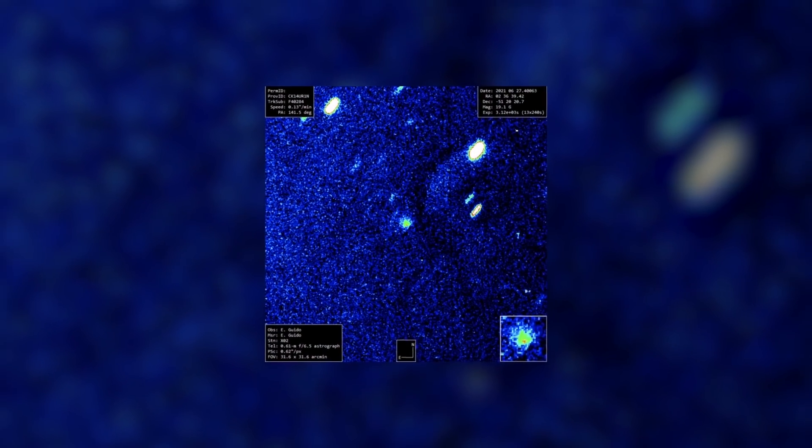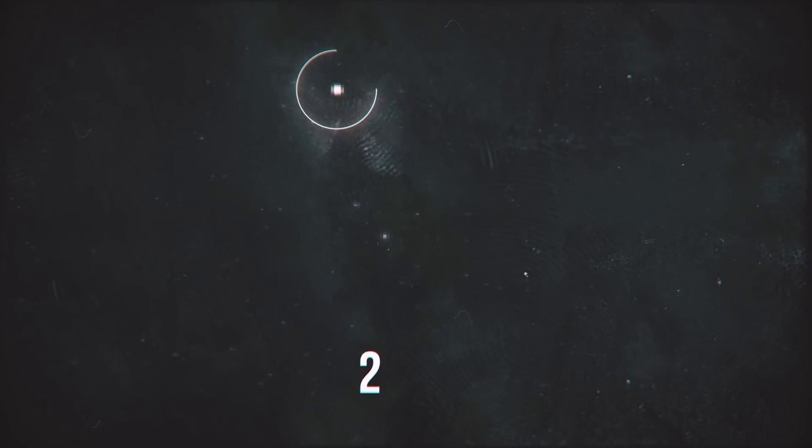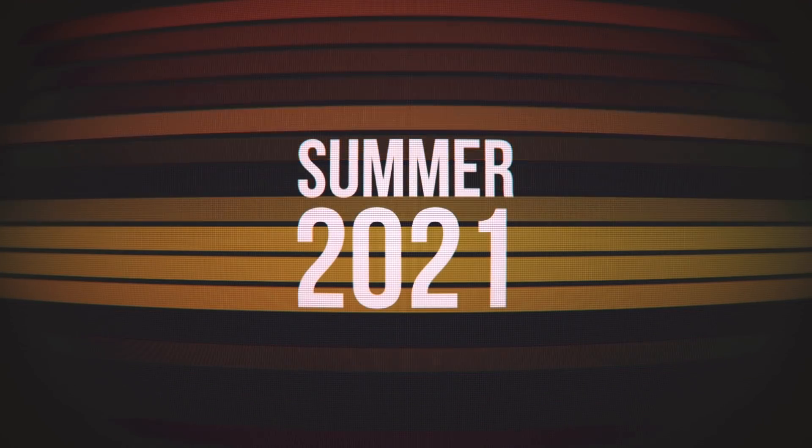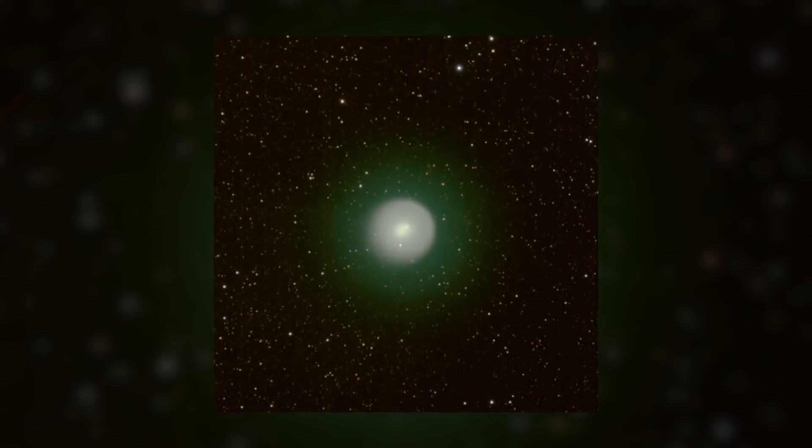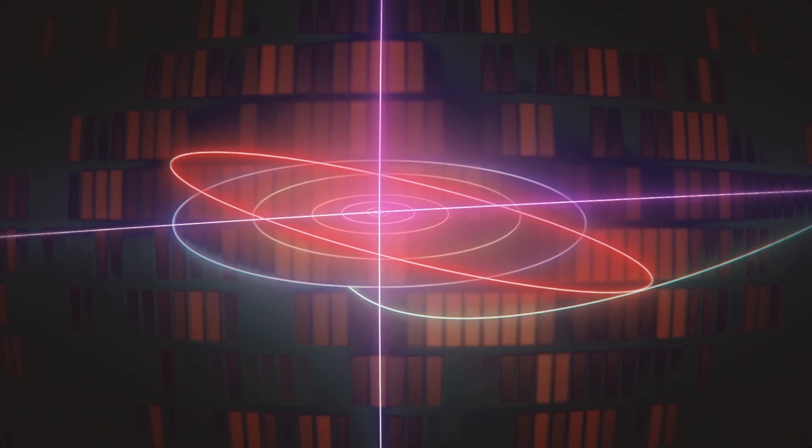But what about the Bernardinelli-Bernstein comet? It was first discovered in 2014 as part of the Dark Energy Survey Project. And in the summer of 2021, scientists spotted a cloud of dust and gas forming on it as it was approaching the Sun. Scientists believe this comet poses no threat to the Earth. Its orbit travels near Saturn's orbit.